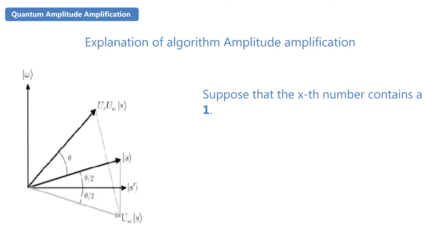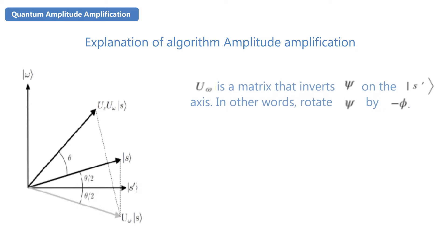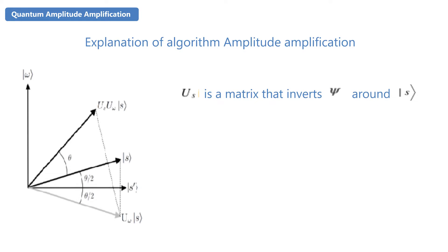Uw is a matrix that inverts theta on the S dash axis. In other words, rotate theta by minus pi angle, so the equation will be as follows. Us is a matrix that inverts theta around S, so final equation will be as follows. Now let us go to the practical part, that is circuit.